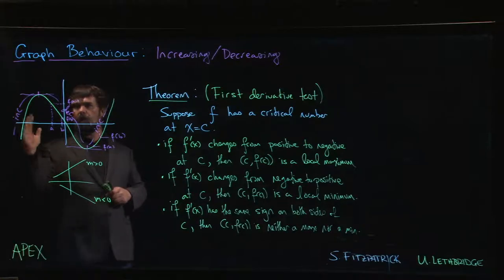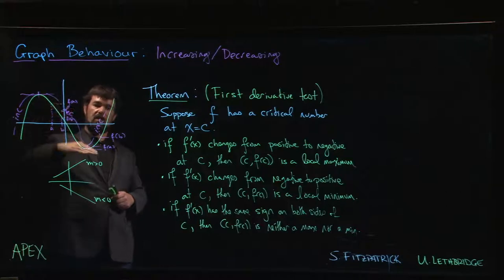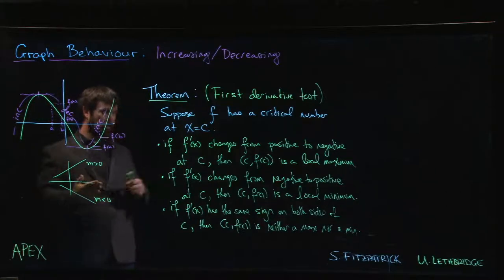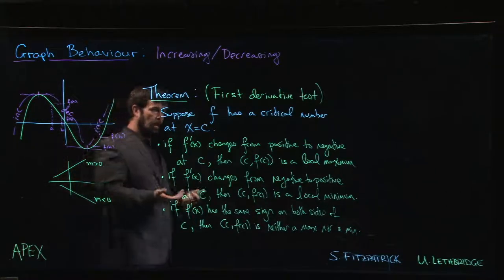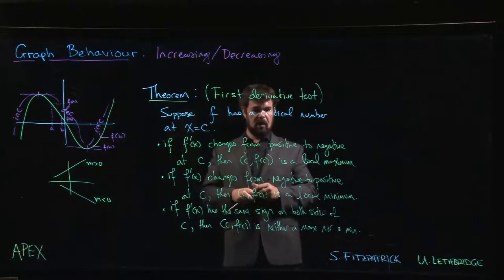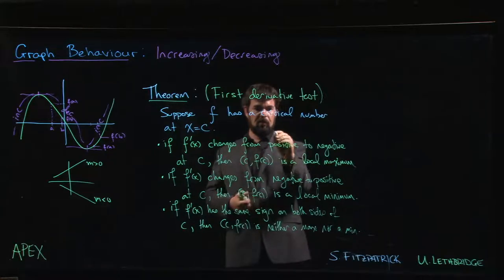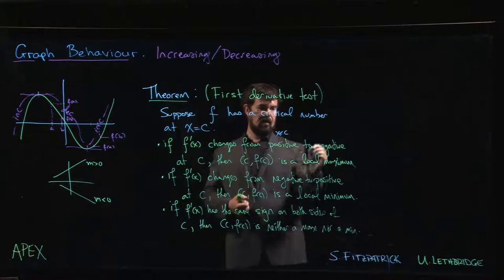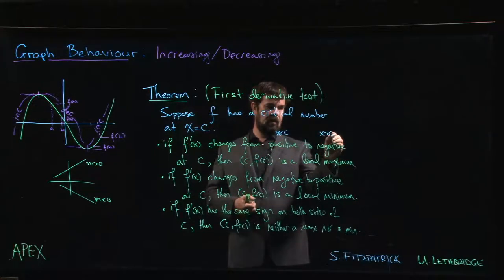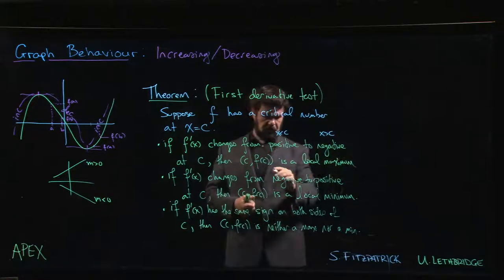The first derivative test makes this precise. When we say positive to negative, we mean that it's positive when x is less than C and negative when x is bigger than C. We always read from left to right.